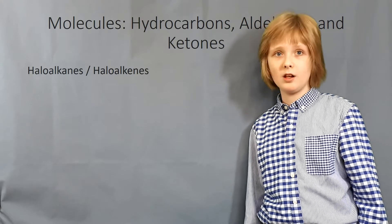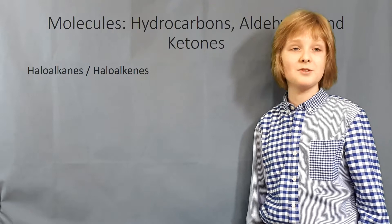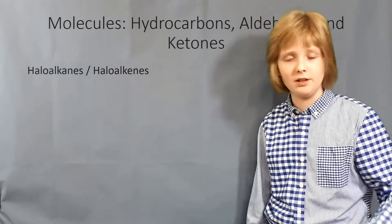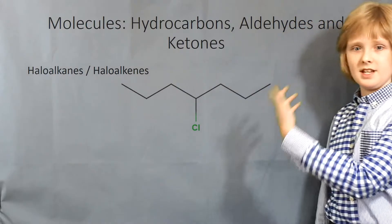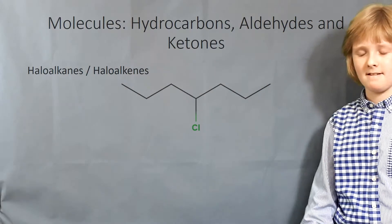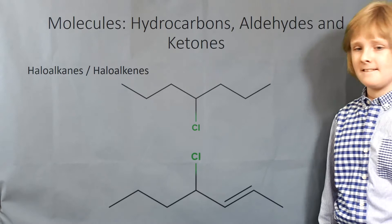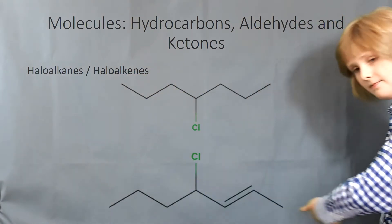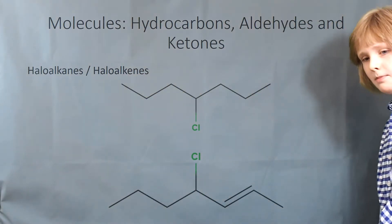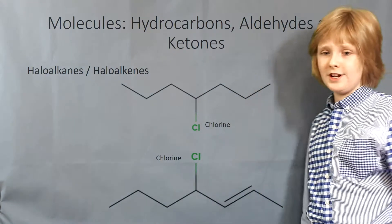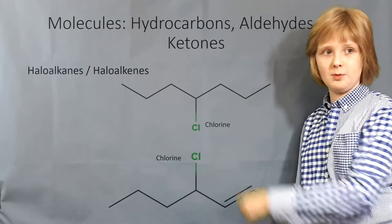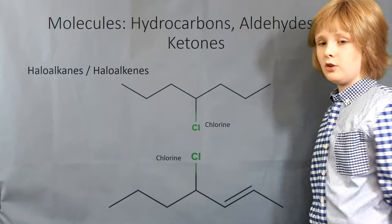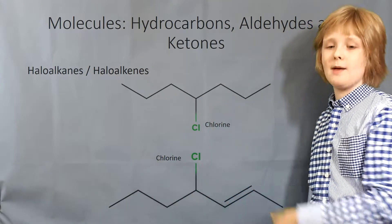Haloalkanes and haloalkenes are alkanes or alkenes with a halogen atom attached to them, at least one. For instance, here and here. So you can see that I've got a heptane and a heptene, but you can see that I've got chlorines instead of hydrogens on some of the carbons. So that makes this one chloroheptane, and that one chloroheptene.